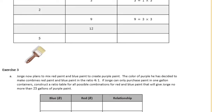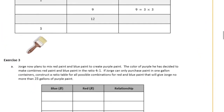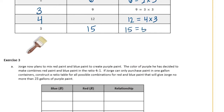Exercise 2. Based on the information on red and yellow paint given in exercise 1, complete the table below. For every 1 gallon of red paint, there are 3 gallons of yellow — because 3 equals 1 times 3. So 2 red would be 6, because 6 equals 2 times 3. For every 3 gallons of red, we need 9, because 3 times 3 is 9. For every 4 gallons of red, we need 12 yellow, because 12 equals 4 times 3. And for every 5, 5 times 3 is 15.